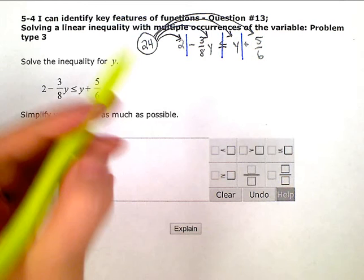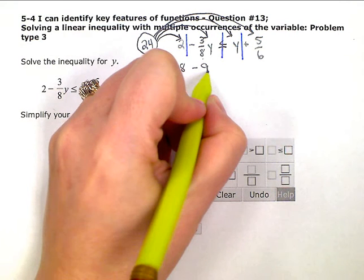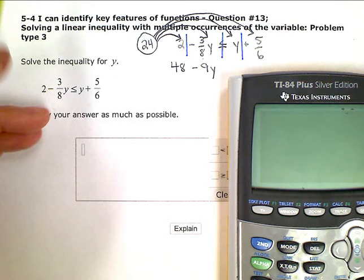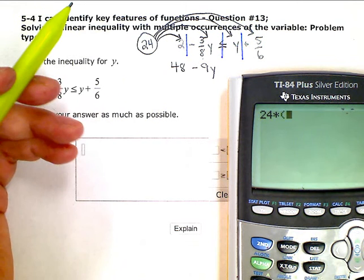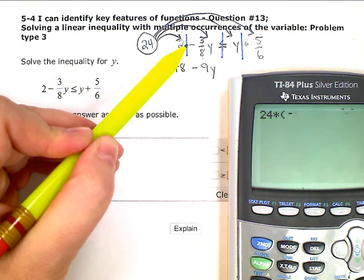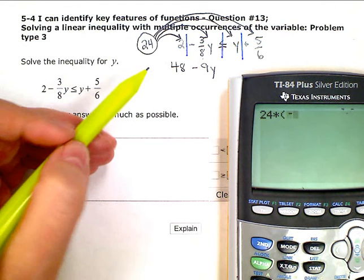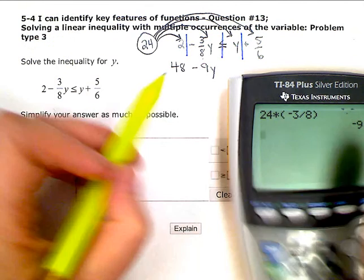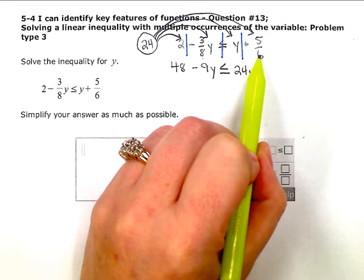So 24 times 2 is 48. 24 times negative 3 eighths is negative 9y. And if you aren't good with working out fractions in your head, you can always do it on a calculator. So 24 times, and I, on the calculator, like to always put my fractions in parentheses. So minus, or negative, 24 times negative 3 eighths will give me negative 9. So negative 9y. 24 times y, on the right, is just 24y. And 24 times 5 sixths is positive 20.